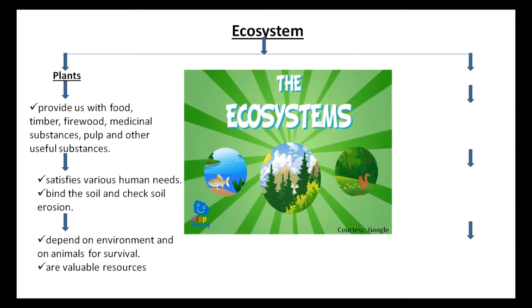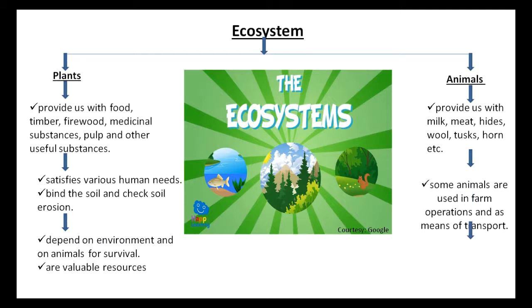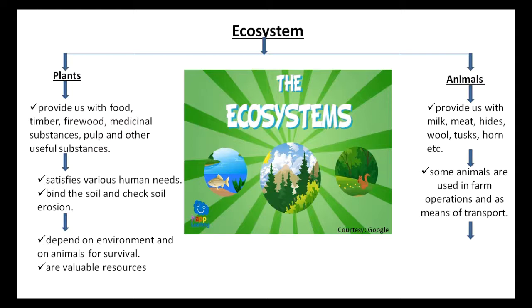The second one is the animals. Animals provide us with milk, meat, hides, wool, tusks, horn, etc. Some animals are used in farm operations and as means of transport. Animals also depend on environment and on plants for survival.